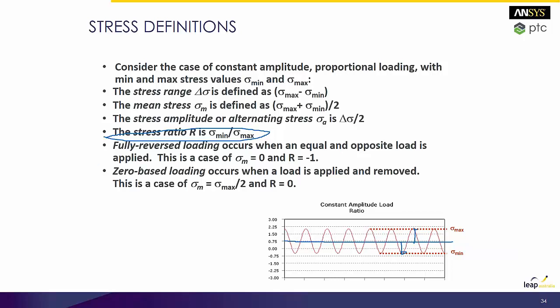If you have fully reversed loading, you have a mean stress of zero because the max and min are simply reversed, and the ratio R is minus 1, because the ratio is the minimum divided by the maximum. If you have zero-based loading, your mean stress is basically your max stress divided by 2, but the ratio is zero because your minimum is zero.